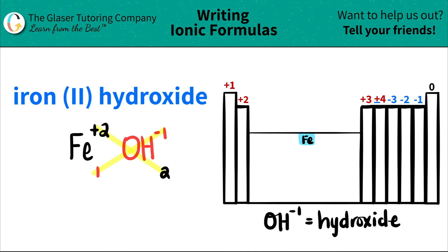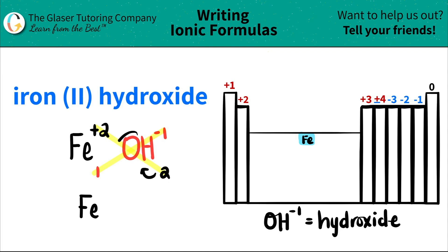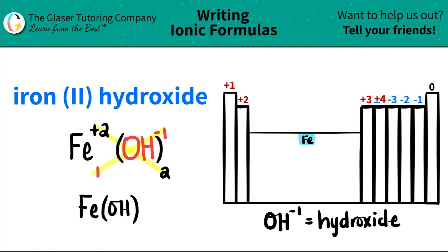So now I'm ready to write my formula. I have iron — I only have one of it, so I don't have to write one. When it comes to multiple polyatomics, in this case I have two OHs. When you have multiple polyatomics, you need to put parentheses around the whole polyatomic. So I'm going to write parenthesis OH, close the parenthesis, and then say how many I have — in this case, 2. So iron 2 hydroxide is Fe(OH)₂.